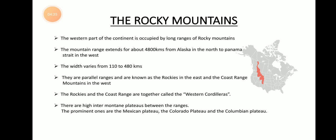These mountain ranges move parallel towards the south. The parallel system near the coastal area is called the Coast Range Mountains in the west. The Rocky Mountains and the Coast Range Mountains meet together at a place called the Western Cordilleras.